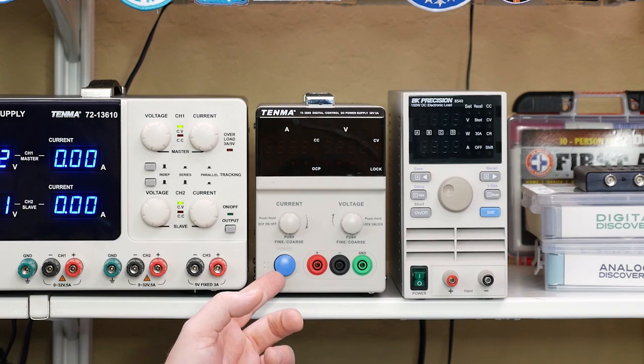Now, some supplies will have an output control for each output or a single enable like this one. Take a note that on this single output supply it only has the AC on and off. That's not terrible but if I have a choice I prefer to have a supply with a separate output control.